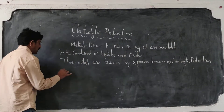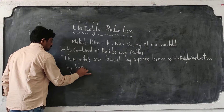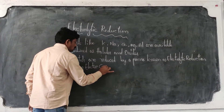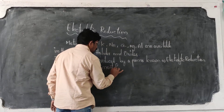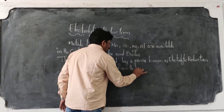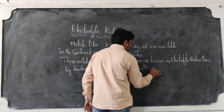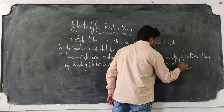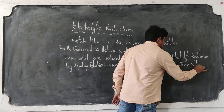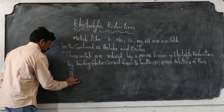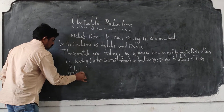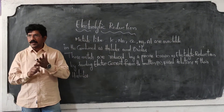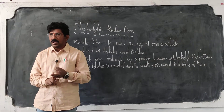These metals are reduced by a process known as electrolytic reduction — by sending electric current from the molten or fused solutions of their halides. They are thereby reduced to metals.